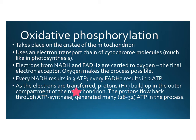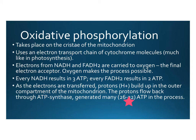As electrons are transferred, protons build up in the outer compartment of the mitochondrion, just like they did in the thylakoid membrane of the chloroplast. The protons flow back through ATP synthase — just like in photosynthesis — and generate as many as 32 ATP in the process, depending on the cell and the exact electron transport chain, since different proteins are involved for different organisms.